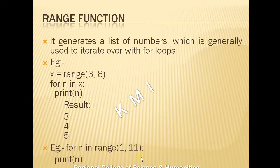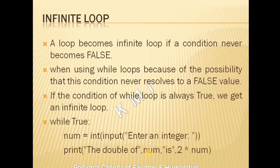For example, for n in range(1, 11): here 1 is the start and 11 is the stop, which means it goes up to 10. This is how the range function works.